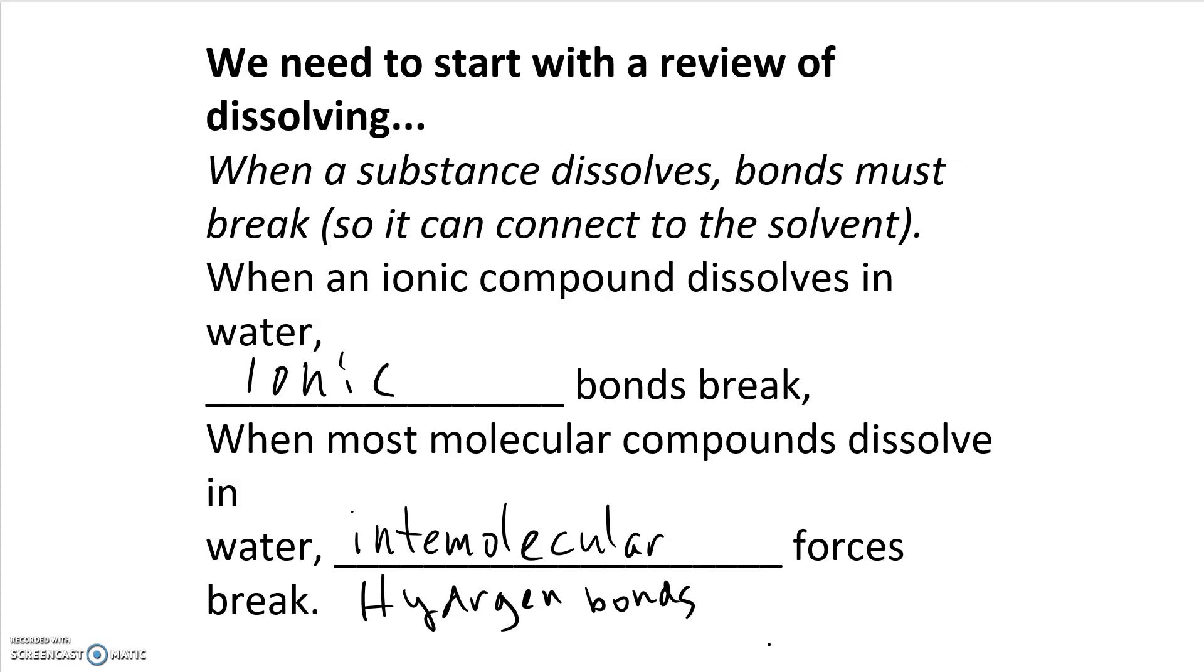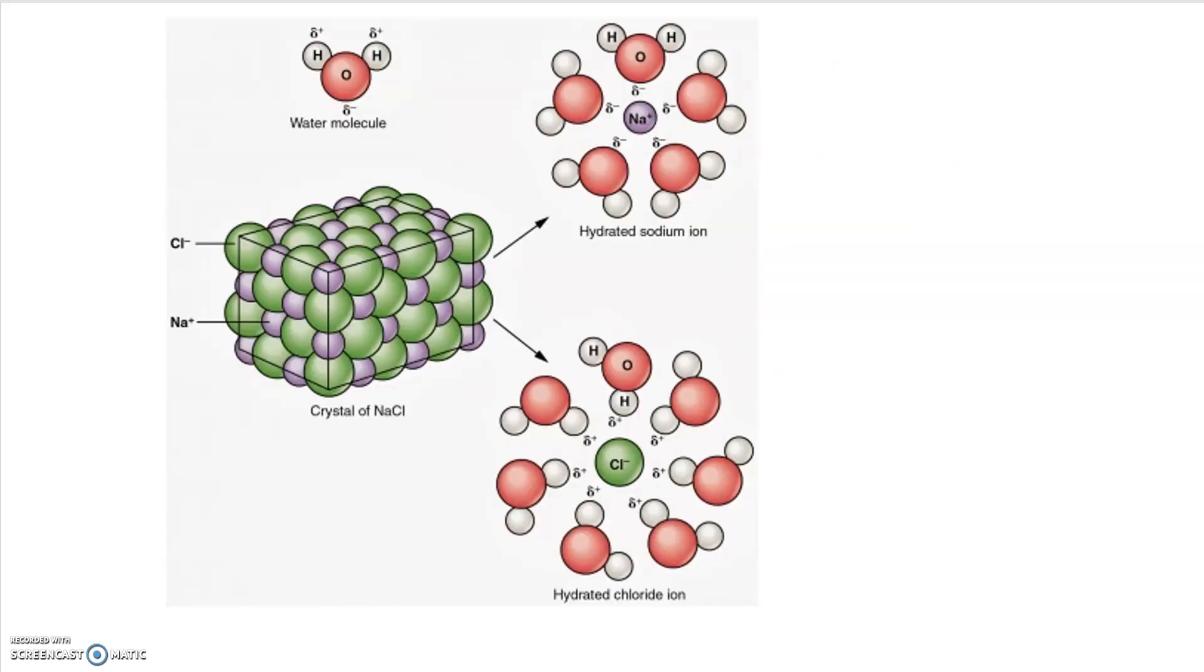To give you a visualization of what we're talking about, here is an ionic compound, a crystal of salt. When water dissolves it, the bonds between the ions in the salt get broken and the ions are pulled apart. Water will form a shell around it where the corresponding partial charges on water will be attracted to the opposite charge on whichever ion it is.